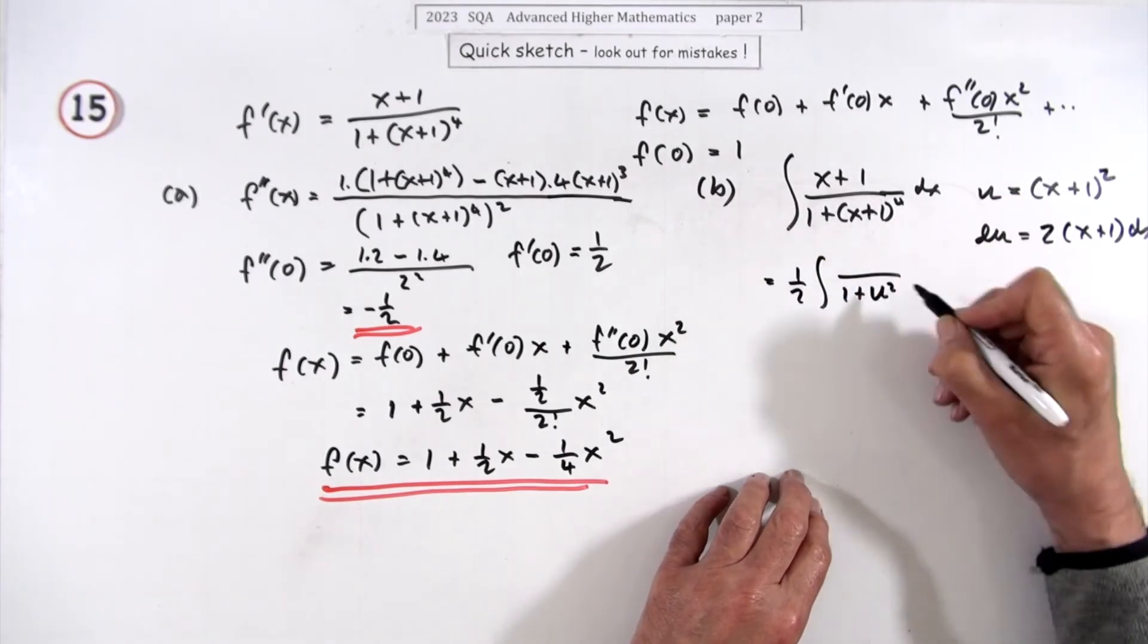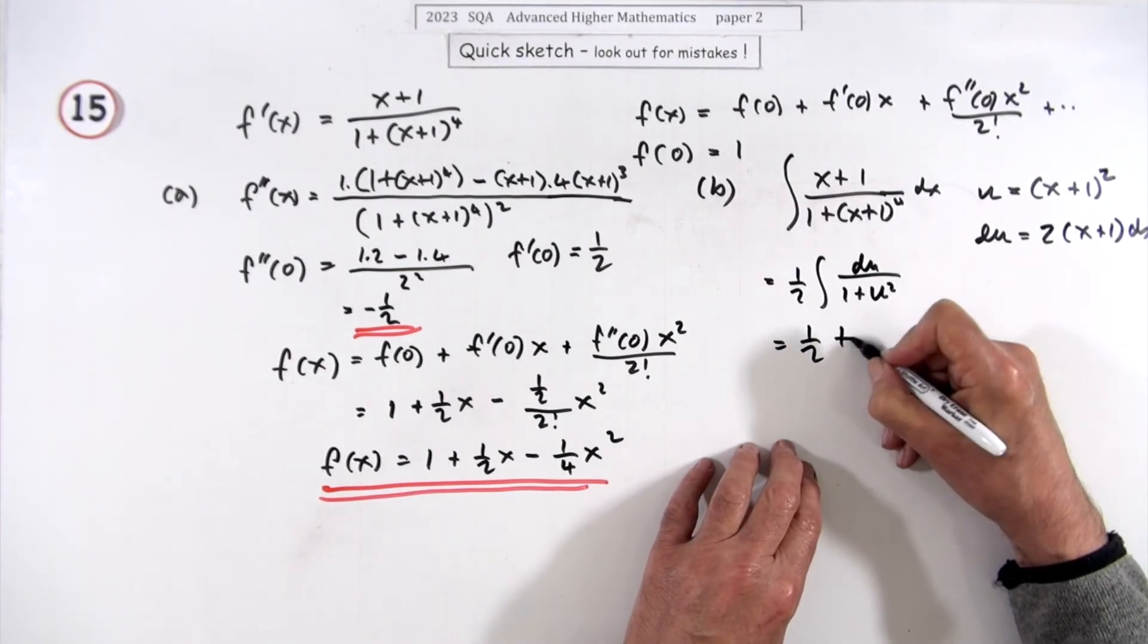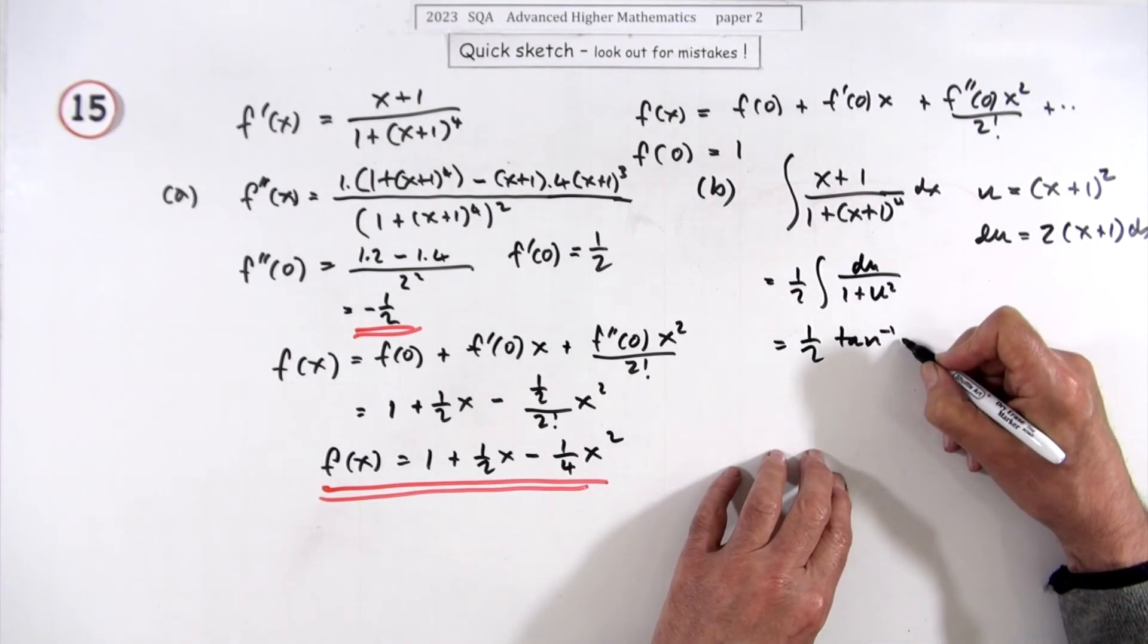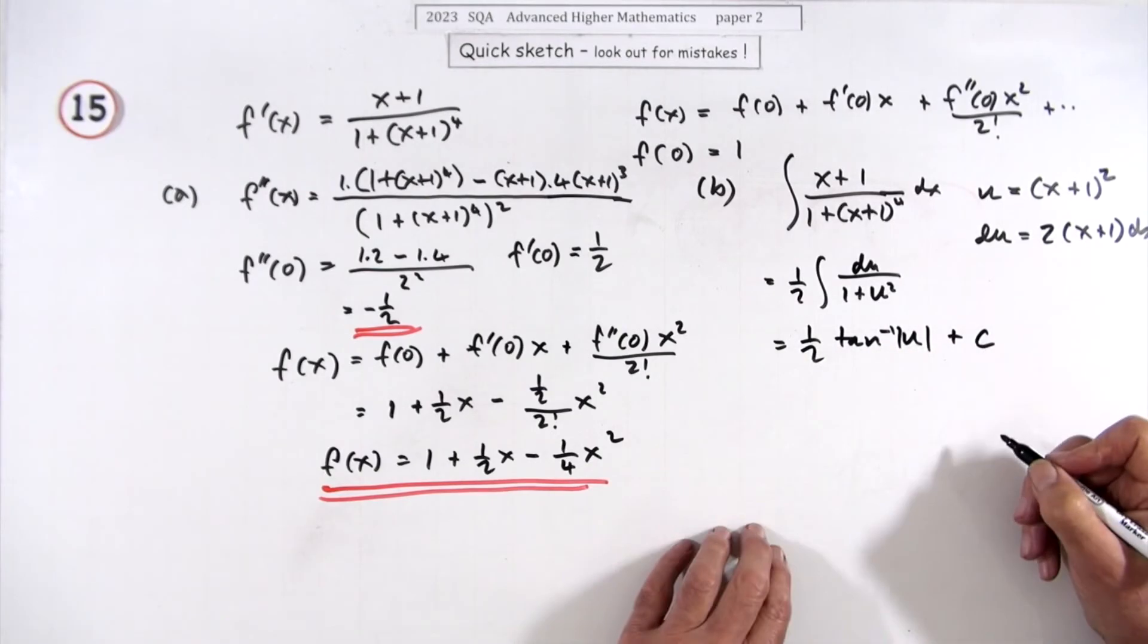It's (1/2)du/(1+u²), and you should recognize that's inverse tan. So it's (1/2)tan⁻¹(u), better put in brackets, plus C.